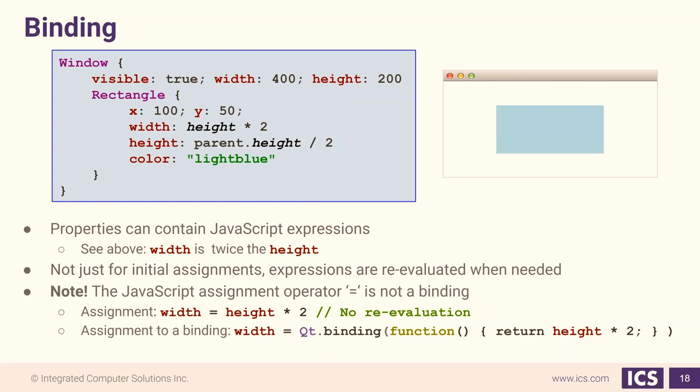the rectangle's parent's height is going to change, and this is going to cause the binding for width and height to be re-evaluated. It's going to use the new value for height and then update the size for our rectangle.